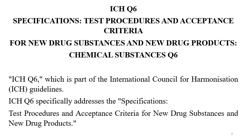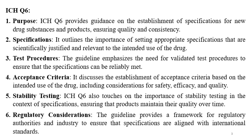Drug substances and drug products are required to meet certain quality parameters. The purpose of ICH Q6 guideline is to establish specifications for new drug substances — that is APIs — and the products. The objective is to ensure quality and consistency. Specifications are the acceptance criteria or limits which are required to be matched. The guideline outlines the importance of setting appropriate specifications that are scientifically justified and relevant to the intended use of the drug.